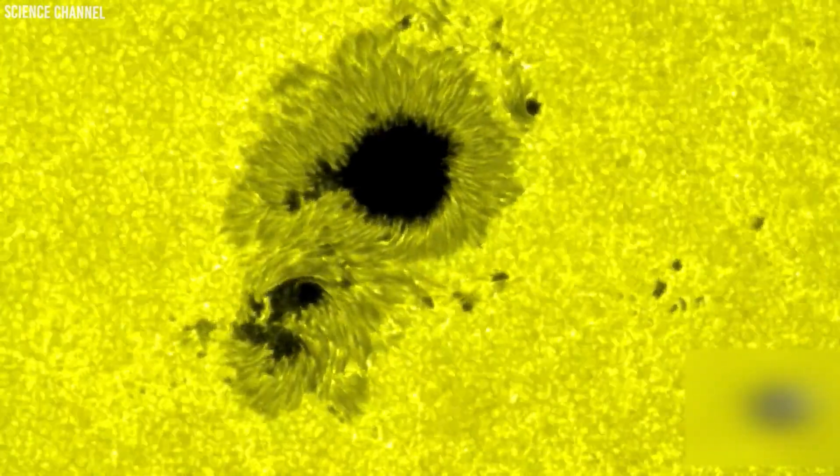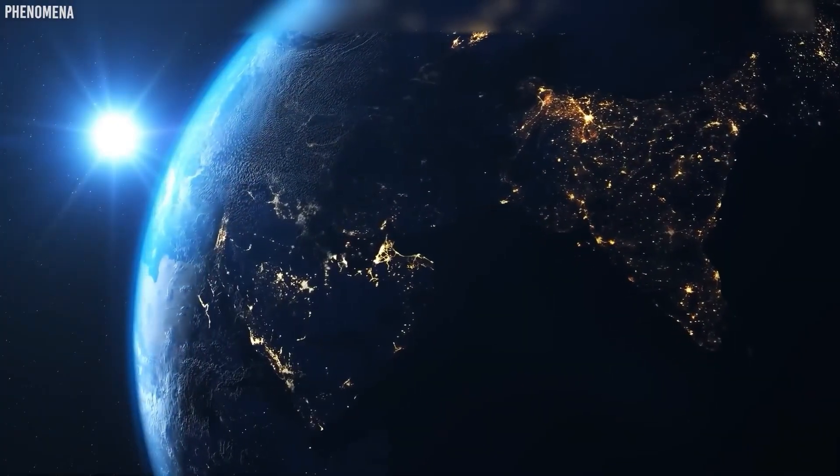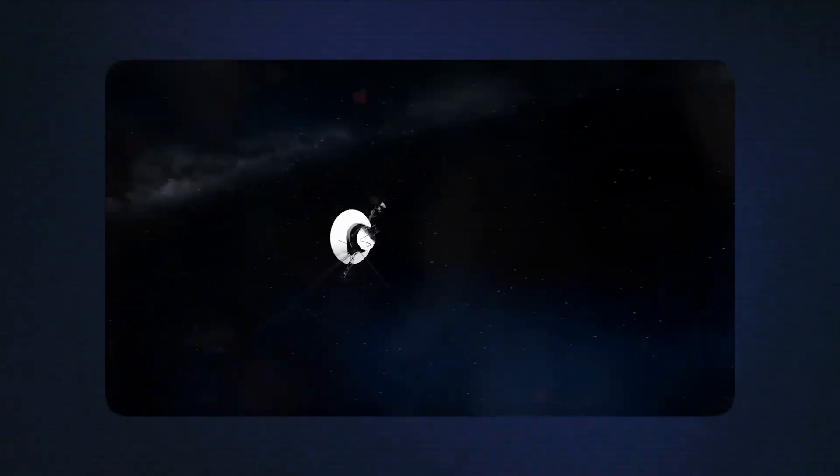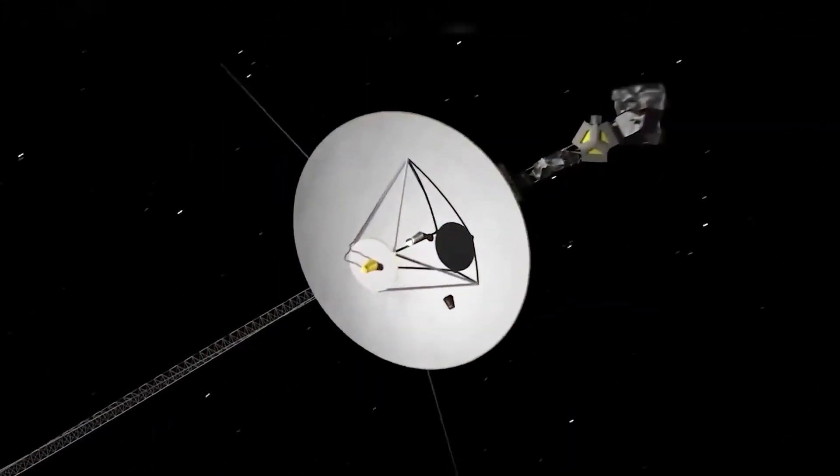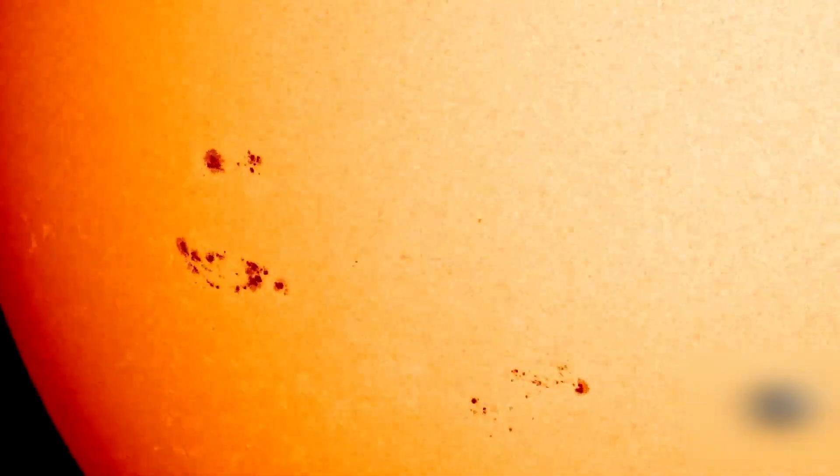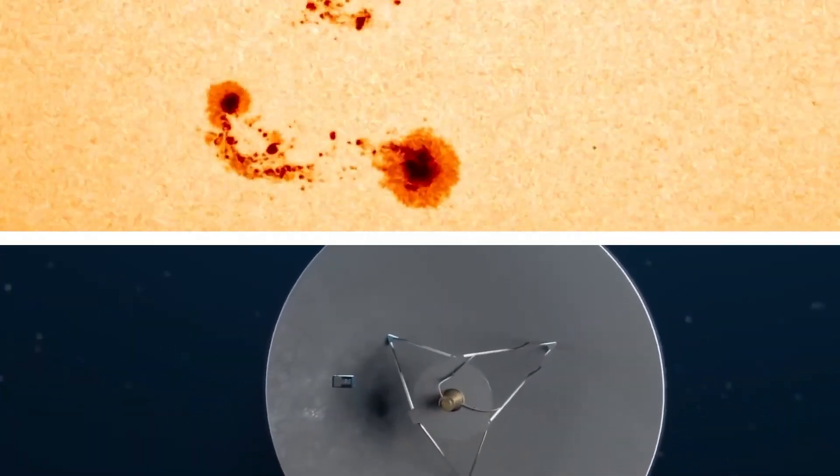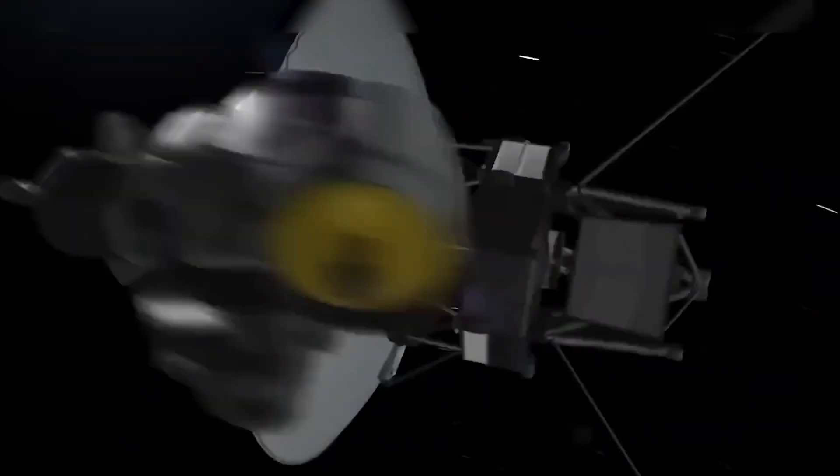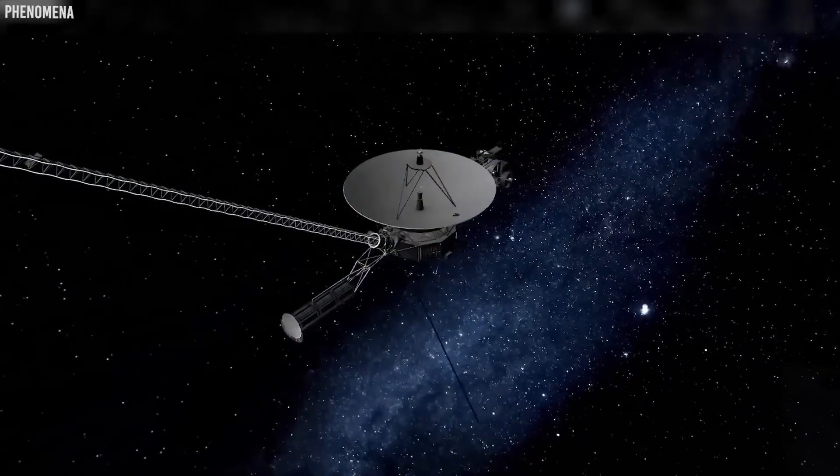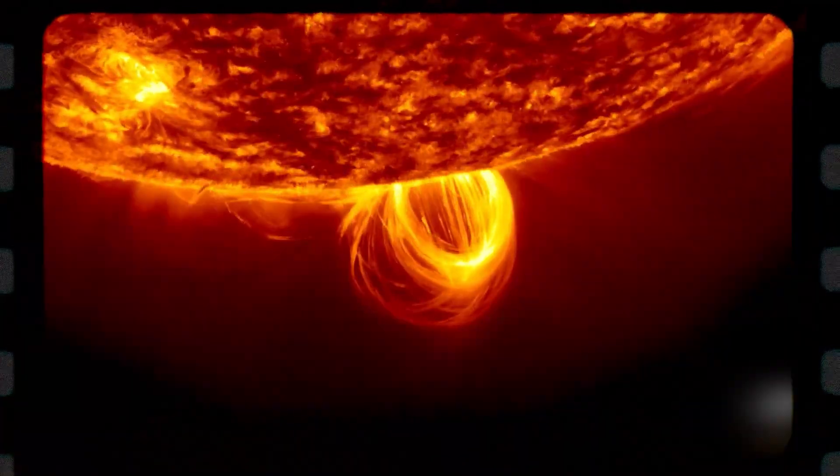Attached to the side of each Voyager spacecraft is a gold-plated copper disc, 12 inches in diameter—a time capsule meant to tell the story of Earth to any intelligence that might find it in the distant future. The Golden Record, as it's known, is humanity's message in a bottle tossed into the cosmic ocean. The story of the Golden Record is almost as fascinating as Voyager itself. NASA gave a team led by Carl Sagan just six weeks to decide what to put on it—six weeks to sum up all of human existence.